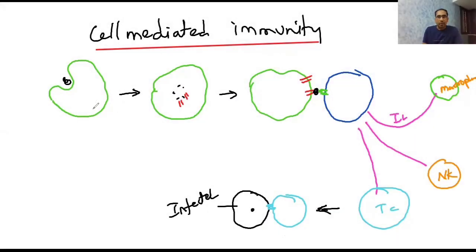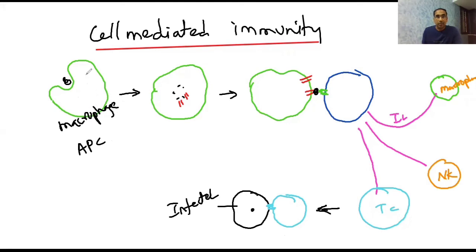Now let us see cell-mediated immunity. If any pathogen enters the body, it can be engulfed by a macrophage. The macrophage also acts as an antigen presenting cell — it engulfs, digests, and processes the antigenic peptides. The processed antigenic peptides are attached to MHC class 2, which presents the antigen to the T helper cell (TH). With this recognition, TH undergoes activation.